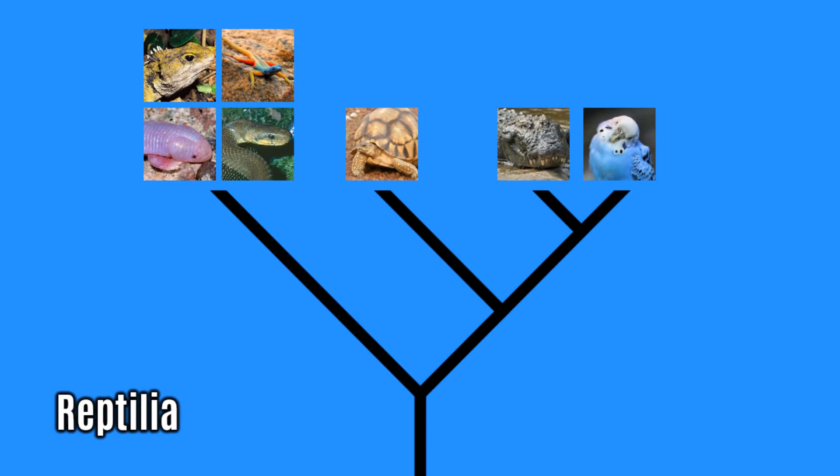Obviously that will be a little bit awkward, so we've coined the new term Sauropsida to describe this group, and keep the old term 'reptile' for ease of conversation. The new term describing relatedness is what we would call a clade, and the old term, which is purely descriptive, we would call a grade.